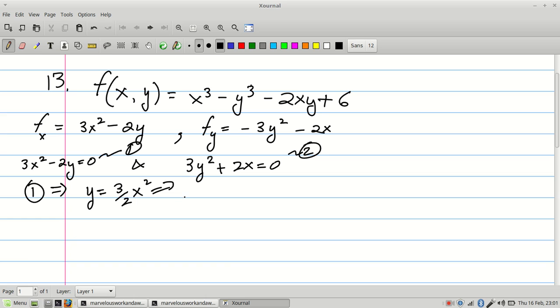Then I'm going to take that and substitute it into the other equation. So it's going to leave me with 3 times 3 halves of x squared all squared plus 2x equals 0. If you simplify this, you end up getting 9 over 4x squared times 3. That's going to be 27 over 4x to the 4 plus 2x equals 0.